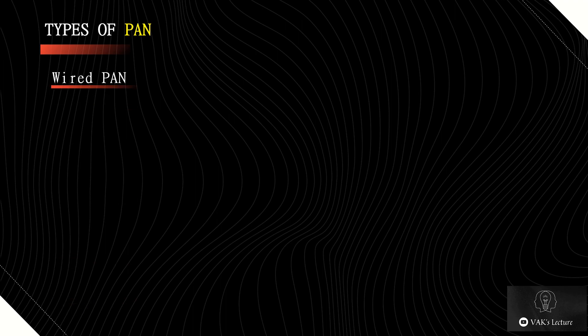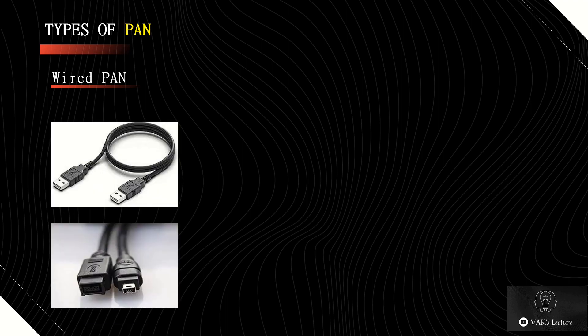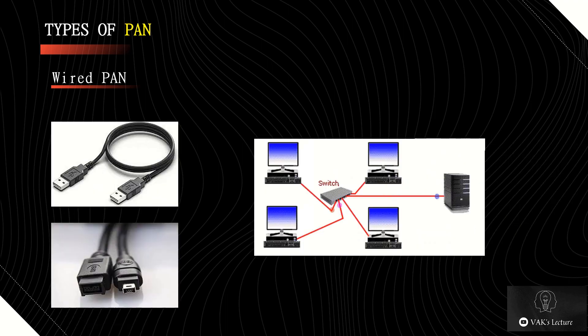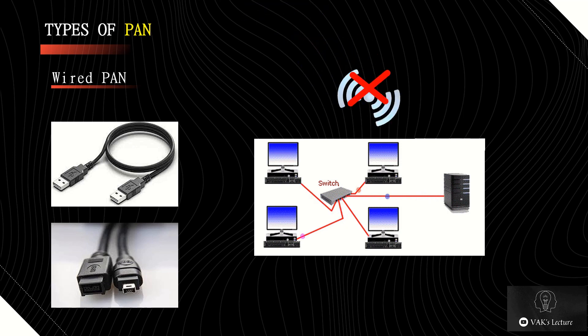In wired personal area network, a physical wire or physical connection can be used, like USB or FireWire, while the devices within the PAN can exchange data with each other. PAN usually does not include a router and also does not connect to the internet directly.